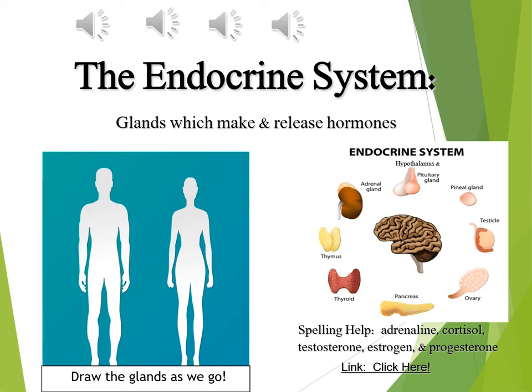We have the hypothalamus and pituitary. The last gland in the brain is the pineal. The pineal gland plays a very important role in some body rhythms — we'll consider more detail when we get to the chapter on consciousness. So we've identified three in the brain: hypothalamus, pituitary, and pineal, and noted the basic functions of each.